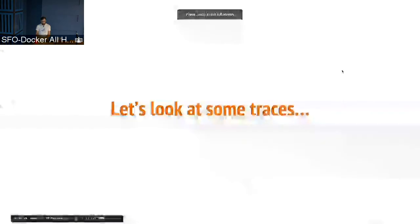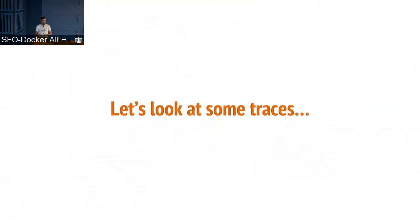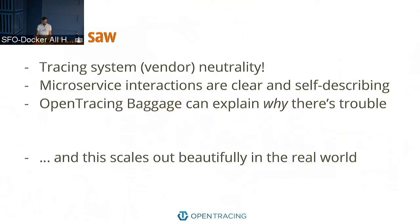Obviously, when you do this in real systems it's not five components in your trace, but thousands, and the critical path is much more elaborate. But these basic principles still apply, and the value increases multiplicatively with the number of components in your system. You saw vendor neutrality — that's the whole point. Microservice interactions are clear and self-describing. You see a single chart showing the timing diagram for your trace. The baggage feature can be quite powerful in explaining why things are going wrong, not just that they're going wrong. And OpenTracing does scale out well in the real world — there are users generating millions of spans per second in production with no ill effects.